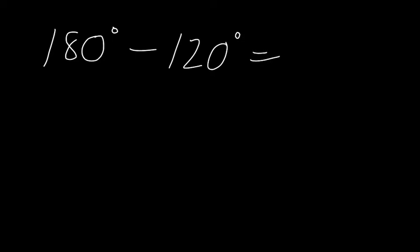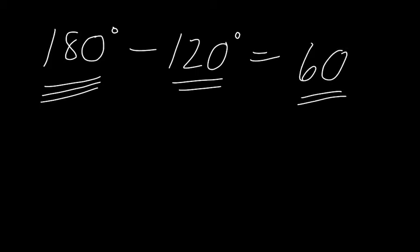So we just take 180 degrees, which is what all interior angles of a triangle must add up to, subtract the two angles that we have found out, which leaves us with 60. That means angle C must equal 60 degrees.